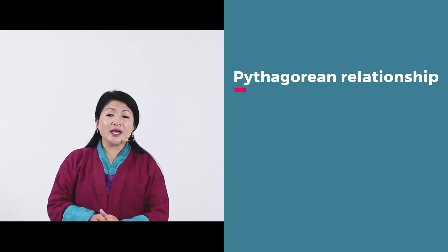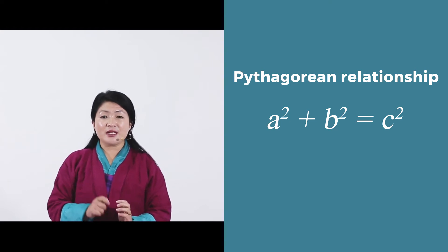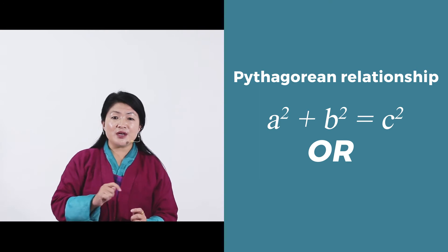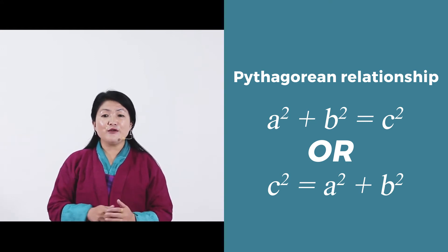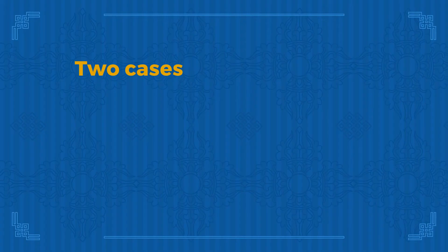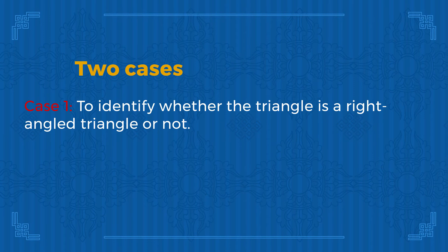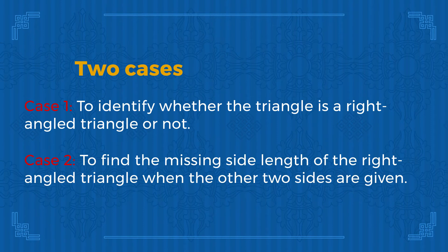This is the Pythagorean relationship, written as A squared plus B squared equals C squared, where C is the hypotenuse. Or we can write it as C squared equals A squared plus B squared. The Pythagorean Theorem can be used to solve multiple types of problems. Today we will look at two cases: Case 1 — identify whether a given triangle is a right triangle or not; and Case 2 — find the missing side length when two sides of a right triangle are given.